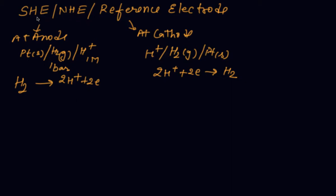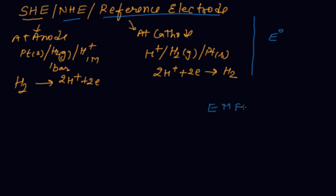Hello my dear students. Now it's time to discuss the SHE, or reference electrode. I would like to share why we are using the word E naught, because some errors are present whenever we are measuring the EMF. I will discuss what is EMF and the difference between EMF and potential difference, but before that I would like to discuss the SHE.